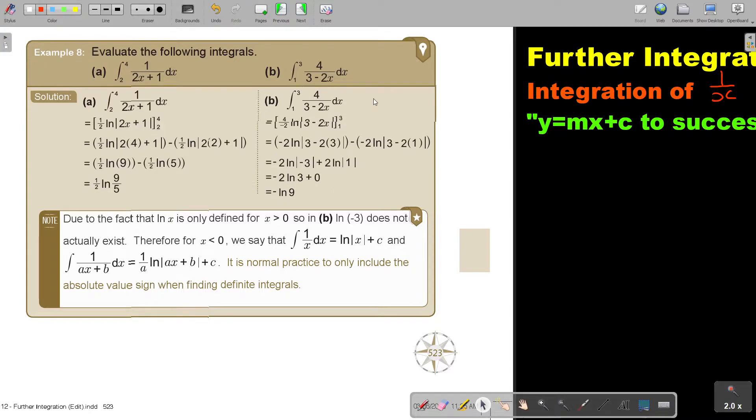It's more for this example, so I'll come to it. But maybe I must first read it to you. Due to the fact that ln x only is defined for x bigger than 0, in part b, ln negative 3 does not actually exist. Therefore, for x smaller than 0, we say that integral of 1 over x dx equals ln absolute value of x plus c, so that we can change it to a positive.